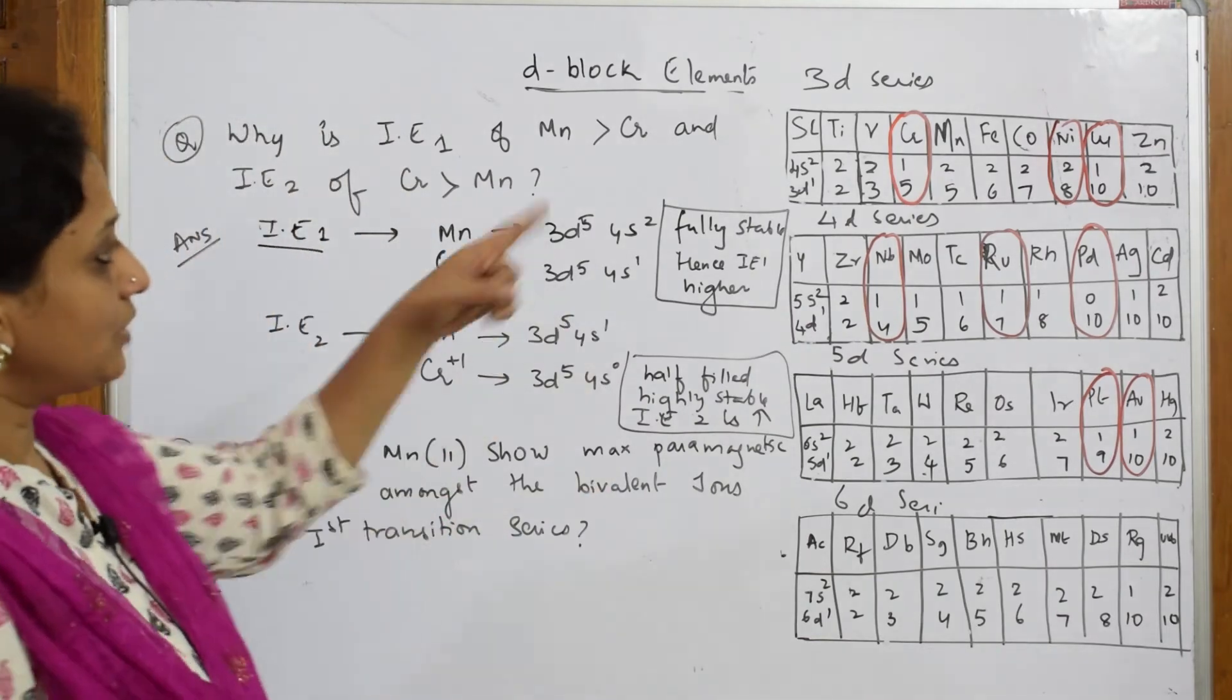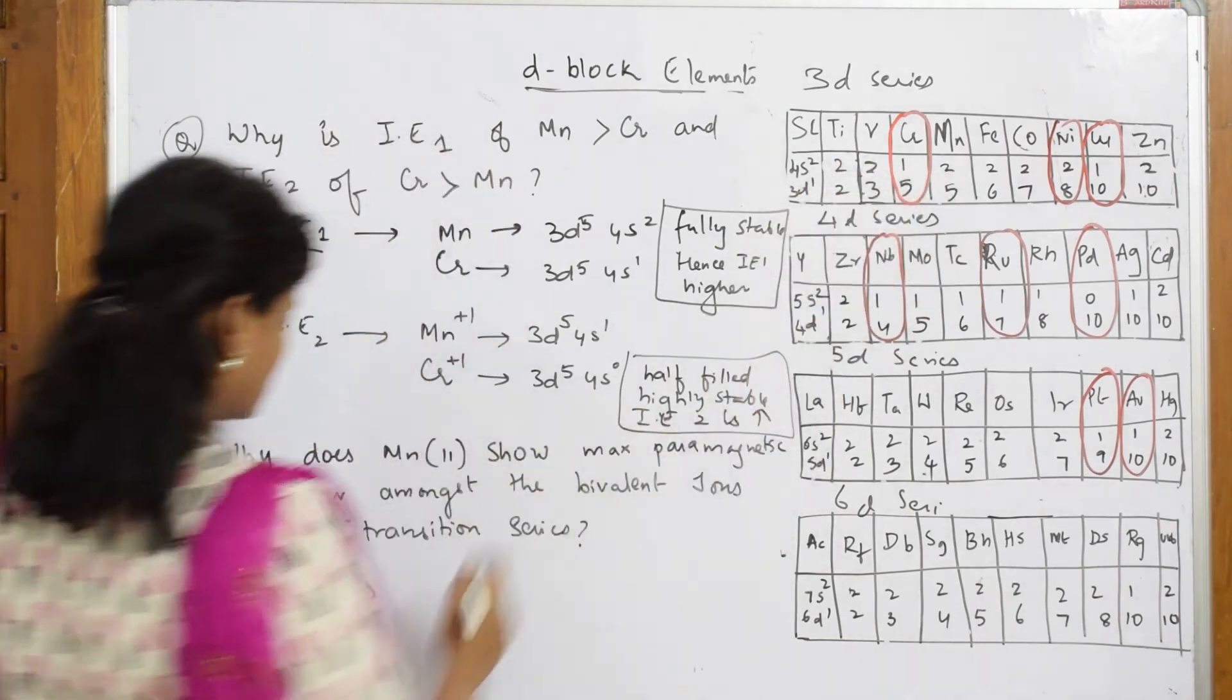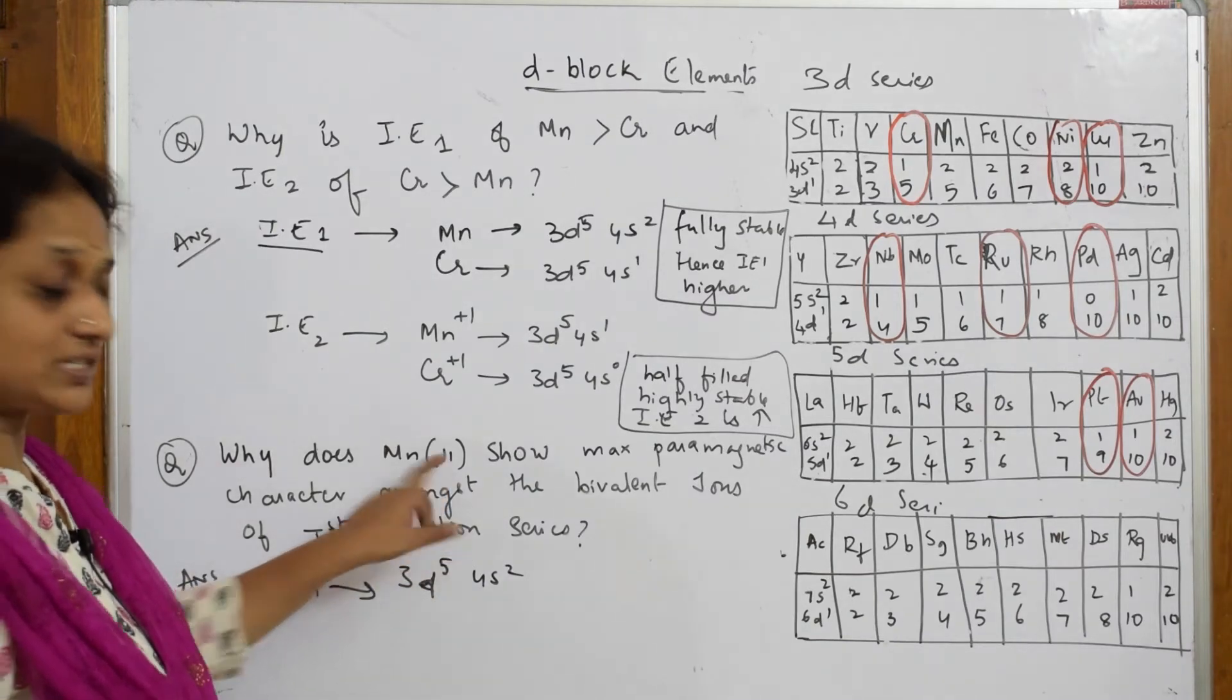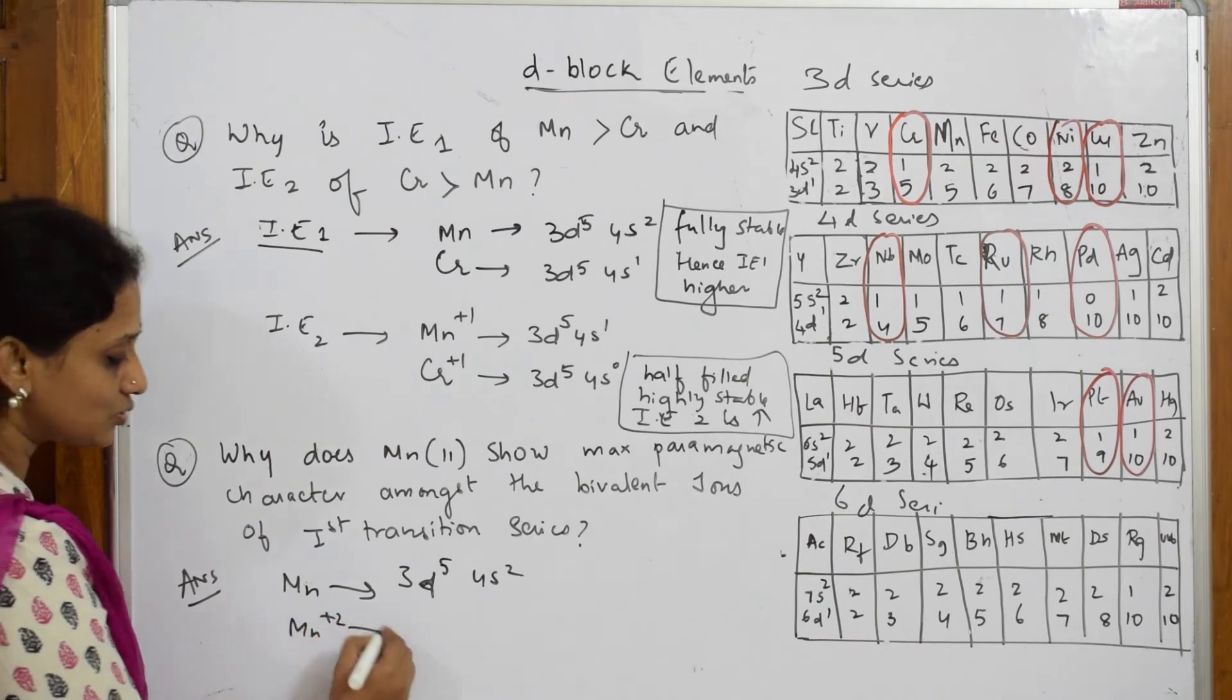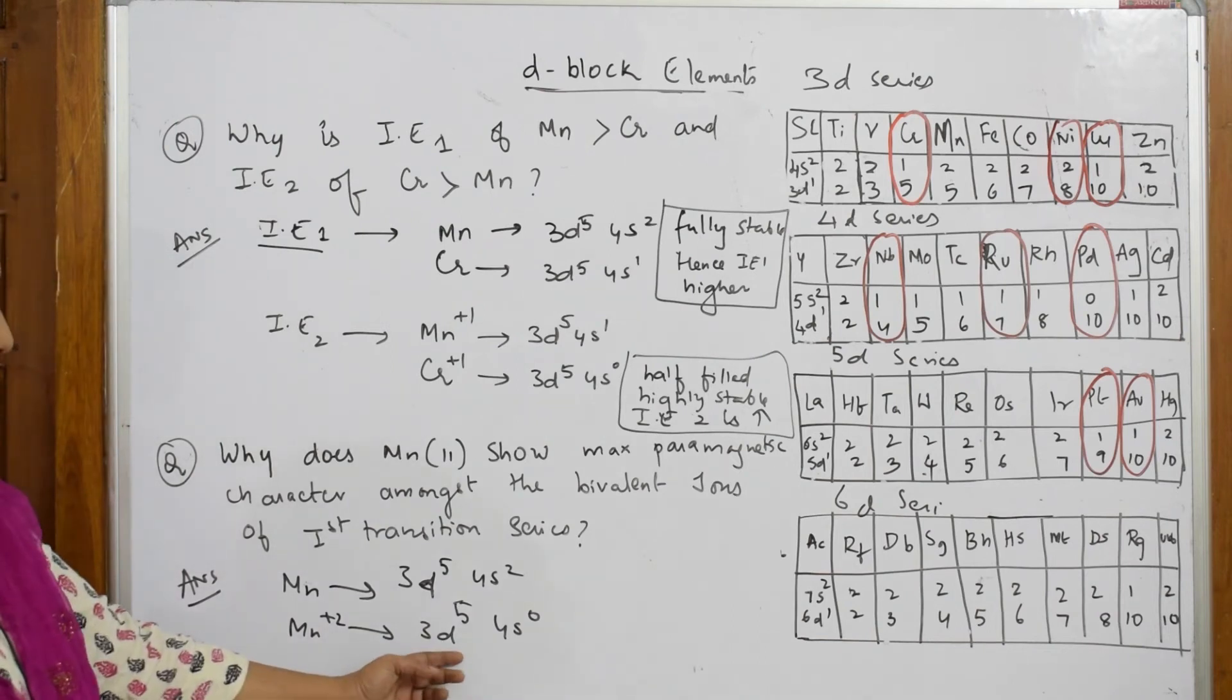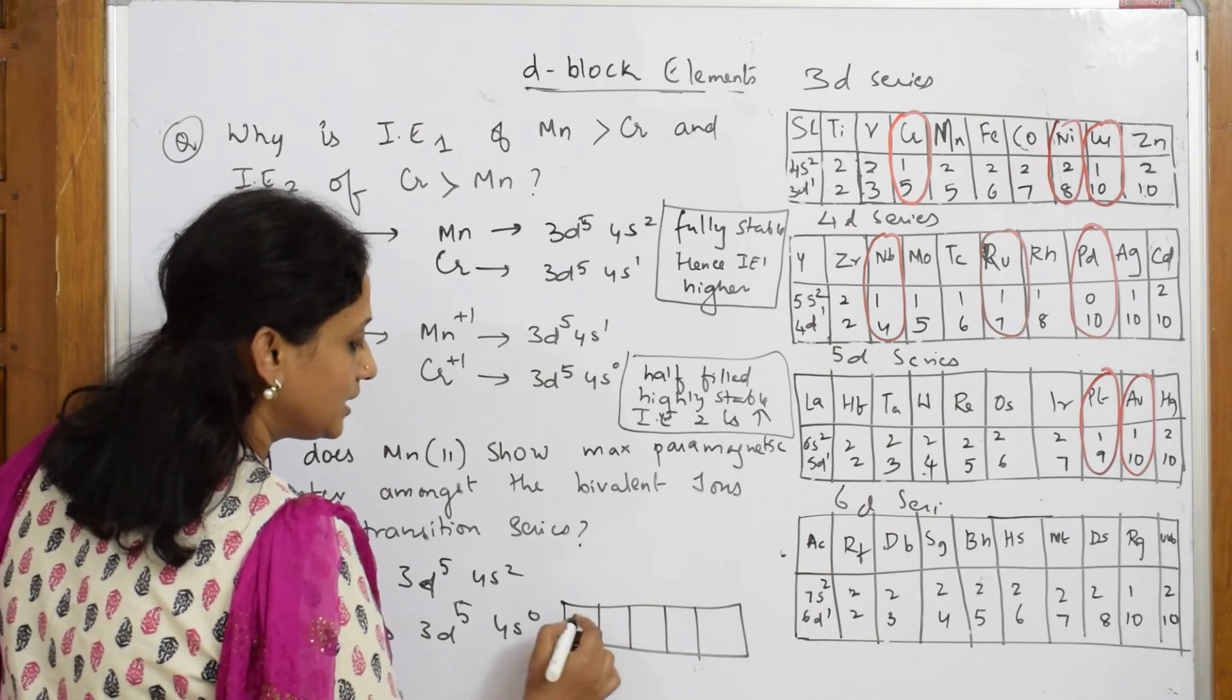Let us write Mn+2 and give the reason. In Mn+2, Mn configuration is 3d5 and 4s2. From where should I remove the electron? This is Mn, and Mn+2 becomes 3d5 4s0. When I see the configuration, it is one, two, three, four, five - all five electrons unpaired.